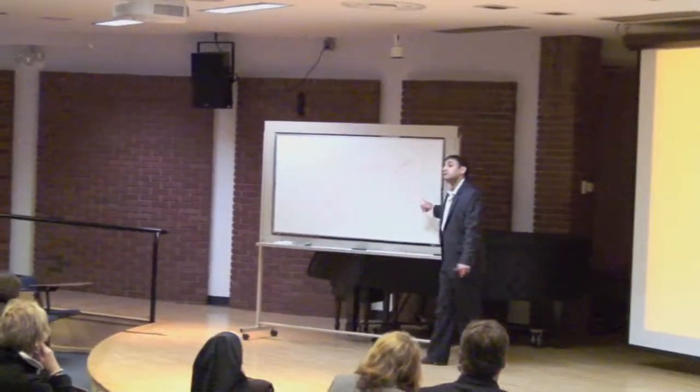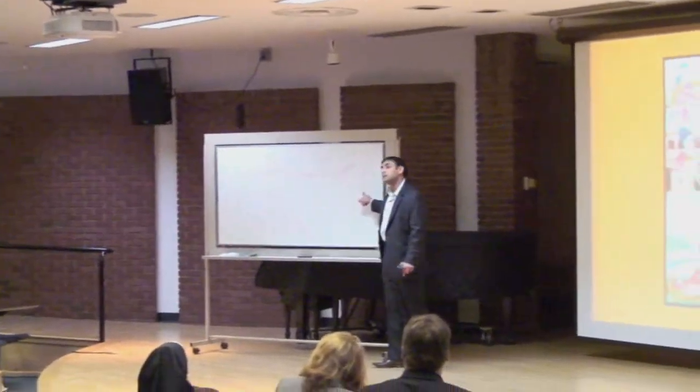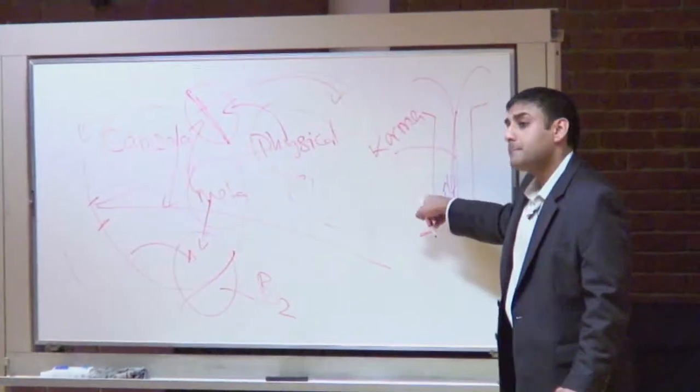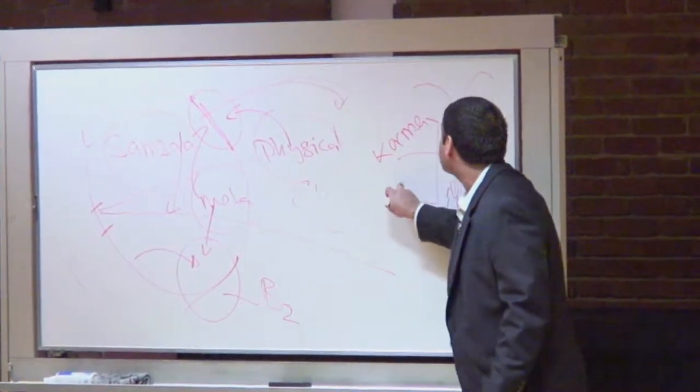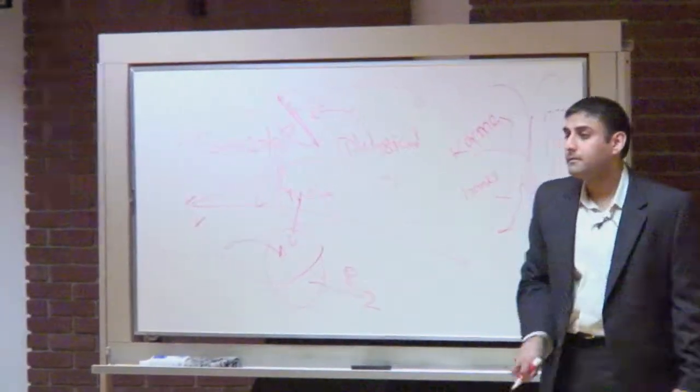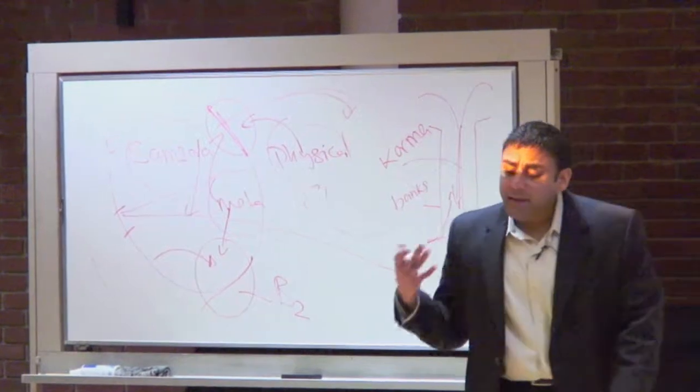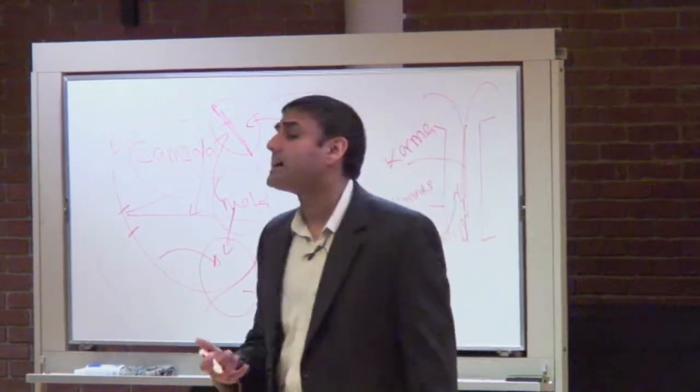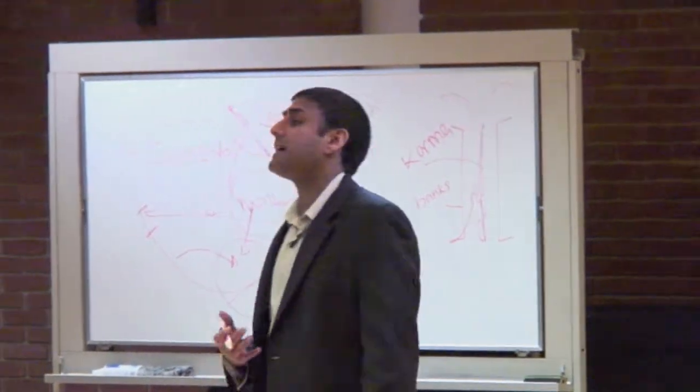Now, keeping this analogy in mind, if the current is karma, then what are these? He says these are the banks of the river. What does a river bank do to a river? It provides its guidance, its shape, its structure.